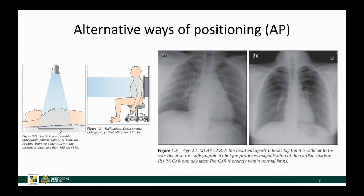Some patients are able to sit but not stand up, so they can be brought to the radiology department where we image them according to their body position. Here the x-ray source is again in front of them and the detector behind them, but the distance between the x-ray source and the cassette is very similar to the normal PA chest x-ray.